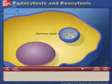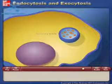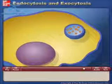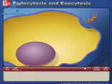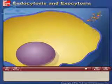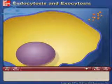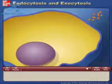Exocytosis is the reverse of endocytosis. This process results in the discharge of material from vesicles at the cell surface to the outside of the cell.